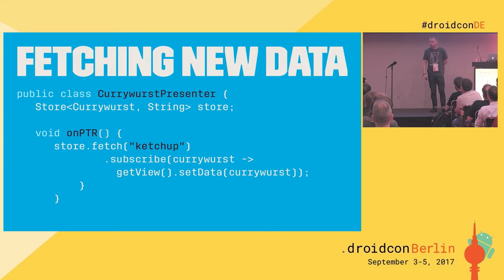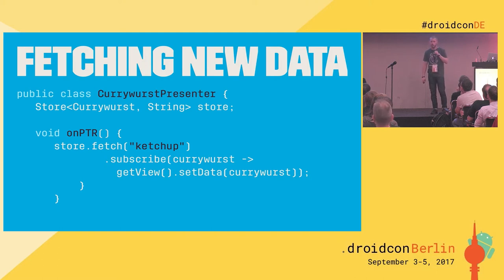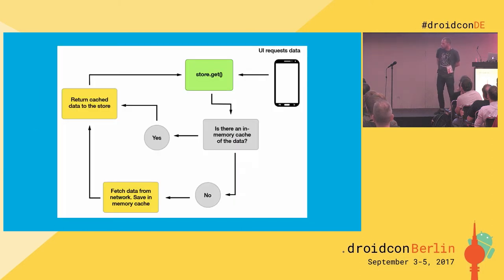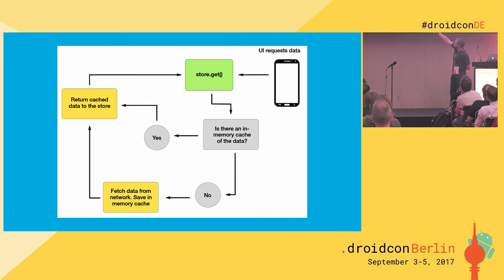What about the times where you really want fresh data — the user initiates a pull-to-refresh, or you're in a background update? We do that with the fetch command. It's very similar to get except you use fetch. The flow is unidirectional: start at the store, check the memory cache, if not there fetch from network, save to store, fetch cache data, parse it, put it in memory cache, and return it.